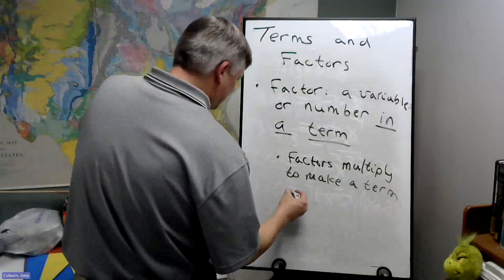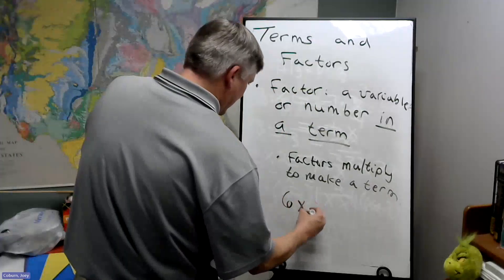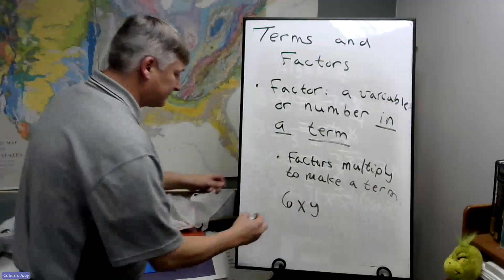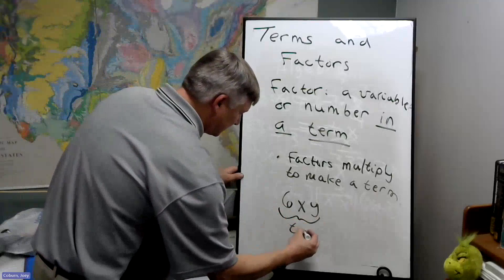So for example, 6XY. This is made up of three factors. This entire thing is a single term.